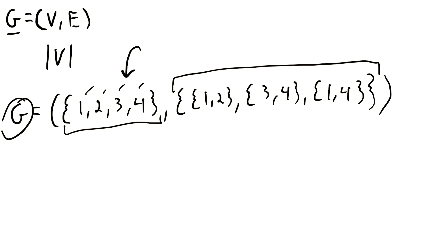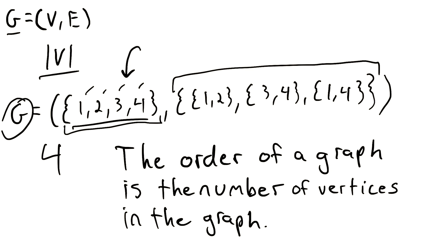So the order of the graph G is four, because there are four vertices in the graph. The cardinality of the vertex set is four. So just to reiterate, the order of a graph is the number of vertices in the graph. That's what order is.